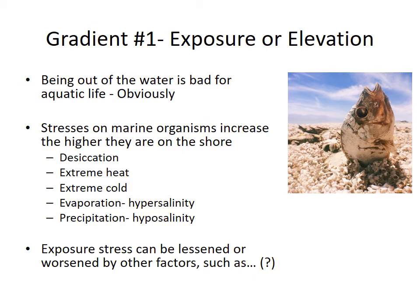The number one gradient is what we sometimes call the exposure gradient, sometimes called the elevation gradient — basically how high you are on the shore. That has great consequences for aquatic organisms because if you're an aquatic organism, being out of the water is bad. Most aquatic organisms cannot tolerate drying out, and prolonged exposure to the air will kill them. The higher you are along this exposure gradient, the greater percentage of time you are exposed to the air versus being underwater, so the stress level you experience is higher.